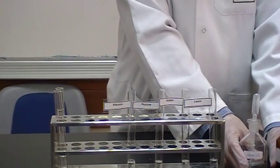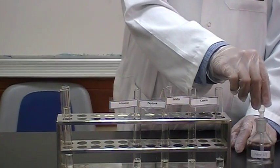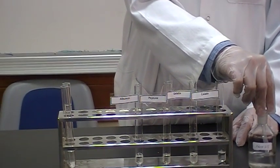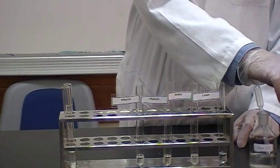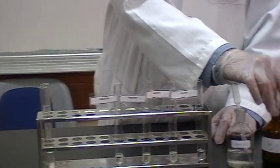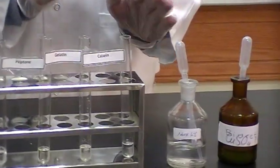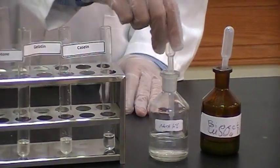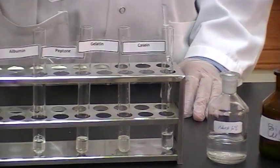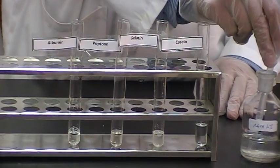First, our reagents, which is, first one is 10% sodium hydroxide, and here we have 1% copper sulfate. The order of them is so important. You could add first, around 1 ml of sodium hydroxide to each test tube.